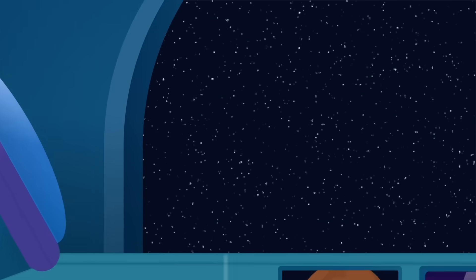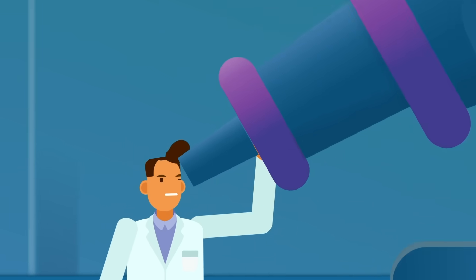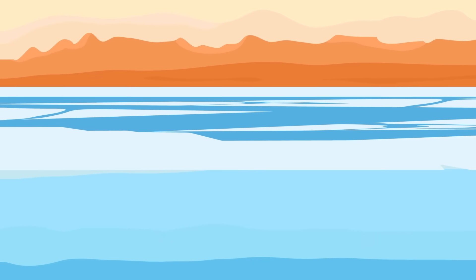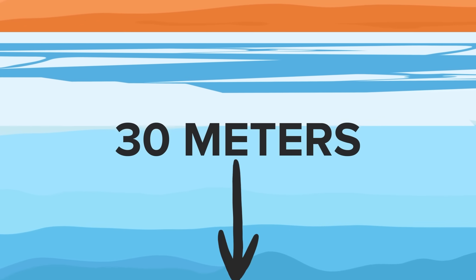And scientists believe that the surface of the poles consists almost entirely of water, just like ours. This is a massive store of water as much as 30 meters deep in some places. So the question is, what's down there, and what did it used to be?